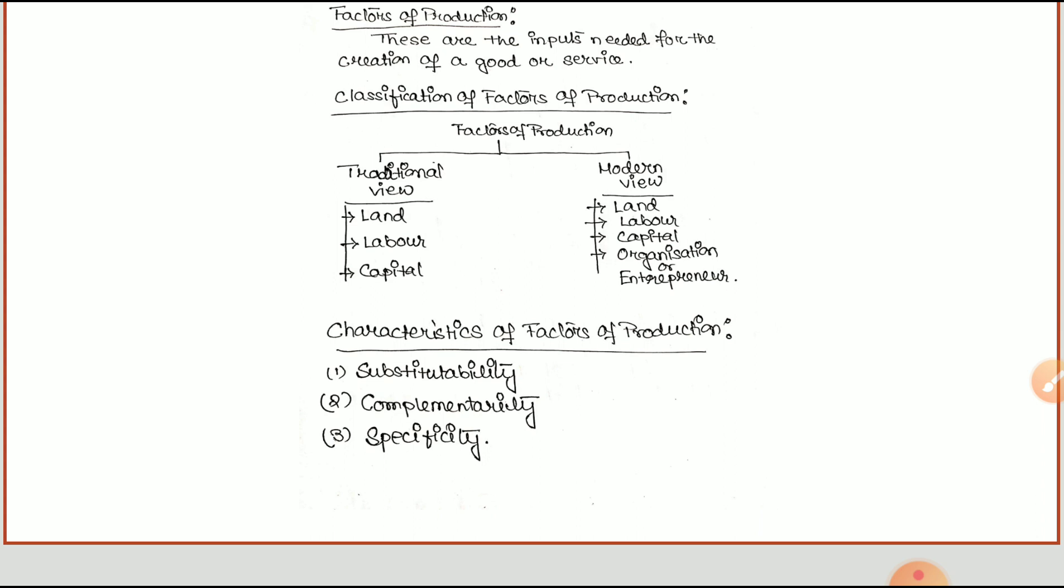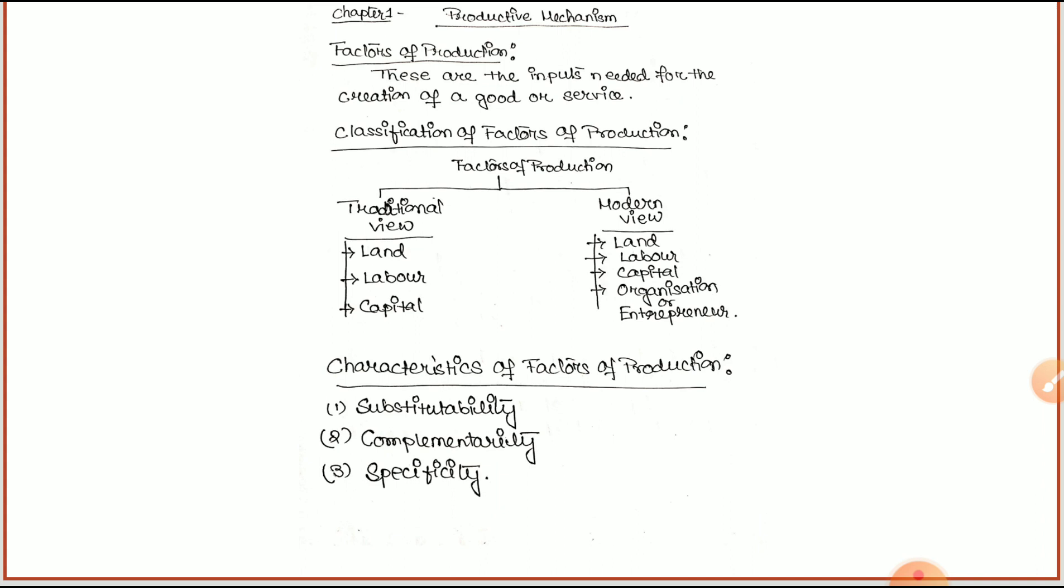So thus, the first chapter is completed. Today we discussed the main important factors of production, their views, and the characteristics.